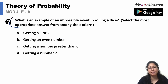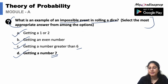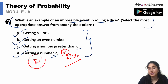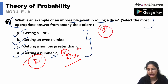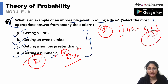What is an example of an impossible event in rolling a die? Options: getting a 1 or 2, getting an even number, getting a number greater than 6, or getting a number 7. Getting a number 7 is something you can never get on rolling a single die. The possible outcomes are 1, 2, 3, 4, 5 and 6. So option D is correct.